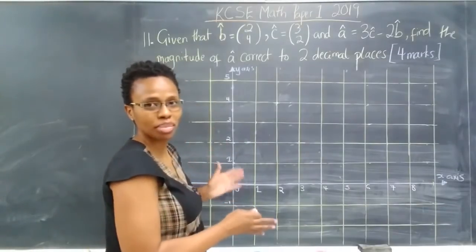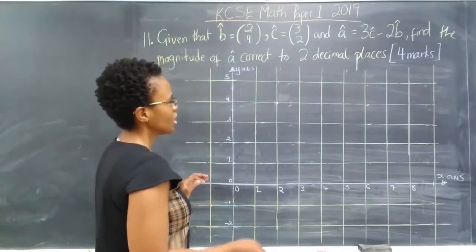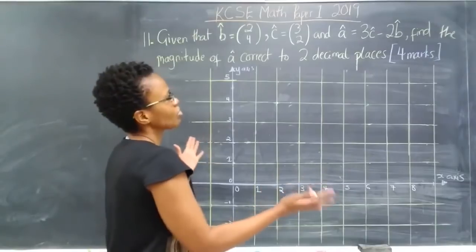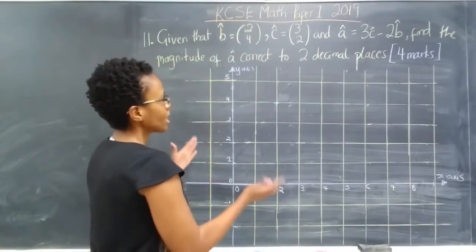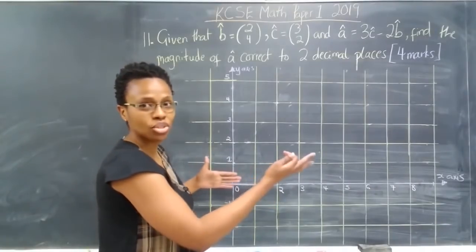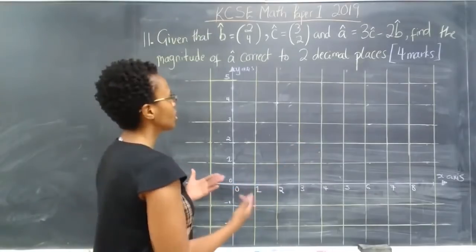So here I have drawn a grid, but you wouldn't need to do a grid in your answer sheet. I've only drawn a grid here just to illustrate the idea of what a vector is. So a vector is just something that indicates the location and the magnitude or the size of something in 2D space.